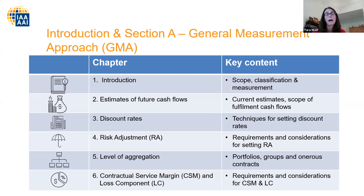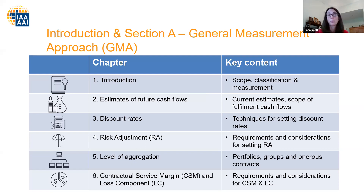Chapter three gets into the discount rate — how you are setting up discount rates, yield curves, discounting for replicating portfolios, and the like. It covers general principles for discounting, how discount rates relate to variable fee or discretionary participating features, the two main approaches — the top-down and bottom-up approaches — and what to do around illiquidity allowances, unobservable interest rates, ultimate forward rates, and other complications in determining discount rates.